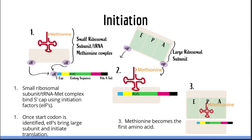Here we have a simple illustration of the initiation process. Let's go over every step together. We start with a tRNA-methionine already bound to the small ribosomal subunit to form the small ribosomal subunit tRNA complex, represented by this structure in the image. With the help of initiation factors, this complex can bind the 5' cap of a mature mRNA molecule. Remember, one of the major functions of the 5' cap is to help the mature mRNA find and bind a ribosome.